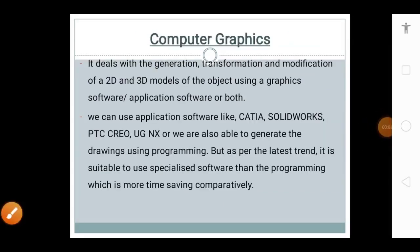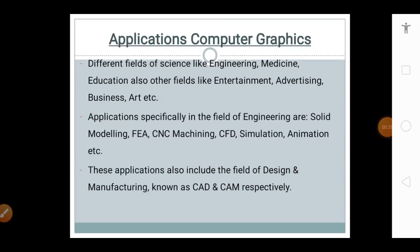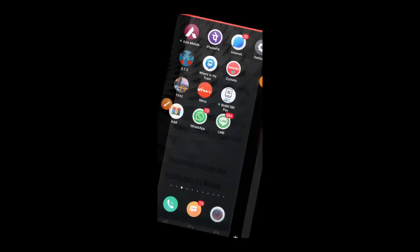Computer Graphics software includes CATIA, SolidWorks, PTC Creo, and UG NX, where we use input parameters like dimensions specified by the manufacturer or supplier to build a model. This process of using software to build models from given dimensions is called Computer Graphics. The applications of Computer Graphics essentially deal with whatever appears on the screen or whatever programs we use to plot various dimensions onto the screen.